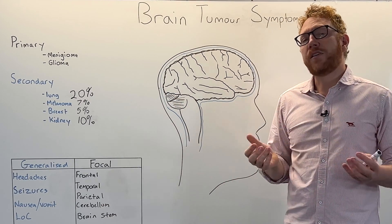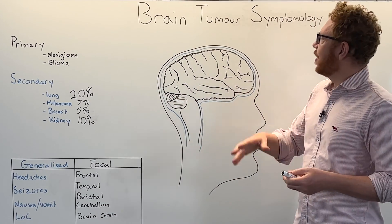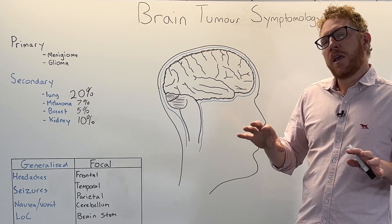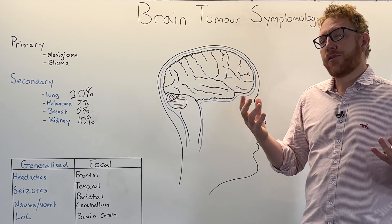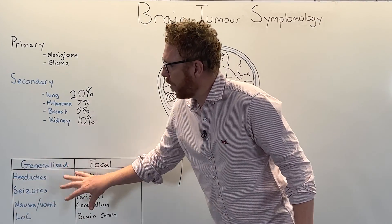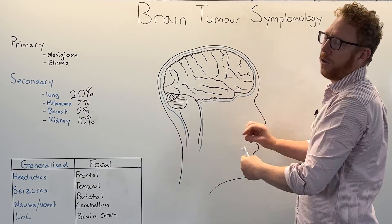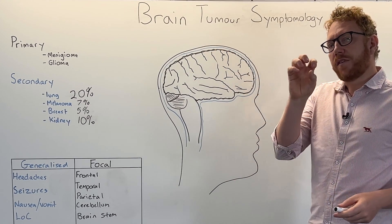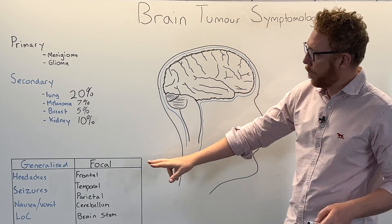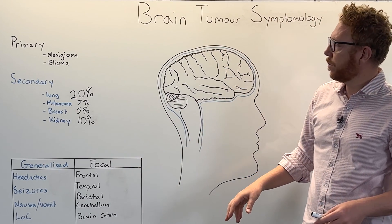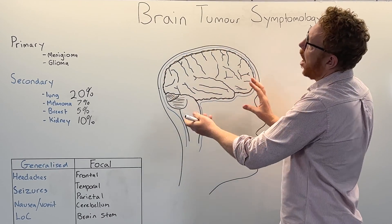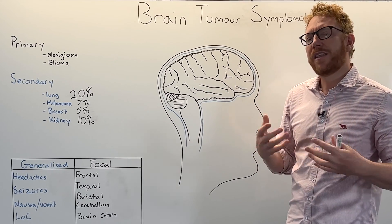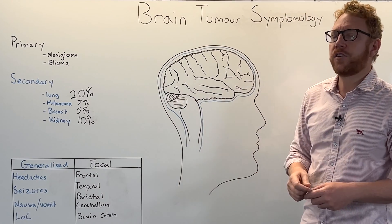Regardless of the tumour type, brain tumours can cause symptoms, which is why we're examining the symptomatology. A useful way to understand how they produce symptoms is whether they cause generalised effects - affecting the whole brain - or focal or localised effects in particular brain regions. A tumour that invades or compresses a local region tends to cause focal symptoms, while one that alters the brain's chemical environment, causing inflammation, changing neurotransmitters or ions, is more likely to cause generalised changes.